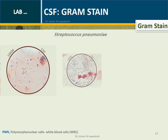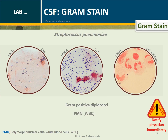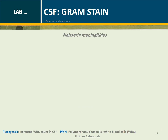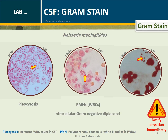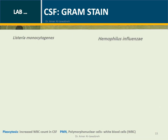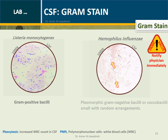CSF Gram Stain: Any organism demonstrated by gram stain is a panic value. Intracellular gram-negative diplococci indicate Neisseria meningitidis. Listeria monocytogenes appears as gram-positive bacilli. Haemophilus influenzae appears as gram-negative coccobacilli.